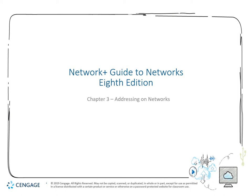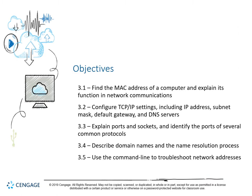Let's jump right into our objectives. First, we're going to talk about how to find the MAC address of a computer and explain its function in network communications. We're also going to look at how to set up TCP/IP, including the IP address itself, the subnet mask used to define internal and external networks, the default gateway, and DNS servers.